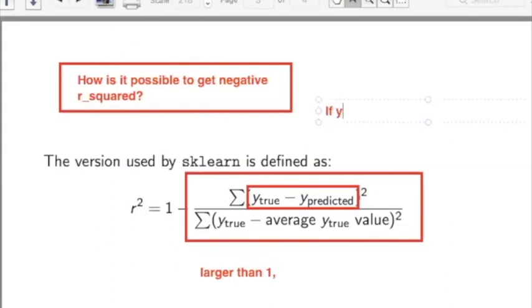And if y-true becomes very far from y-predicted, in other words, if there's a big gap between the true value and what your model is predicting, the numerator can become very big, which leads you to very negative R-squared values. I know that some of you have been seeing this in the models that you've been trying on some of the datasets.